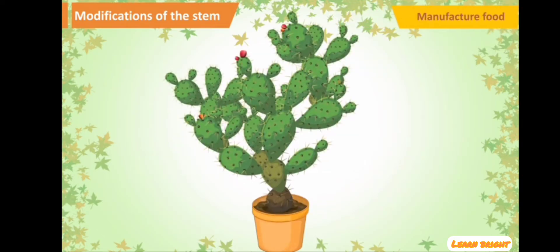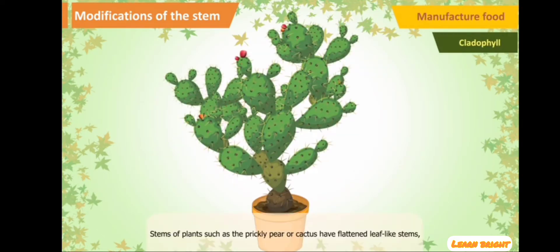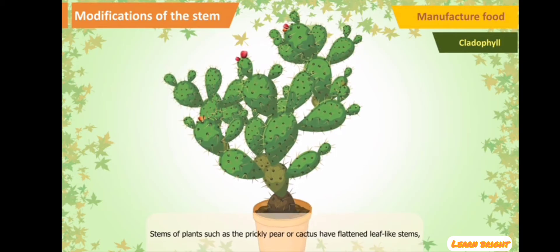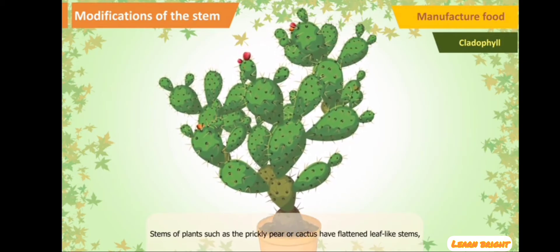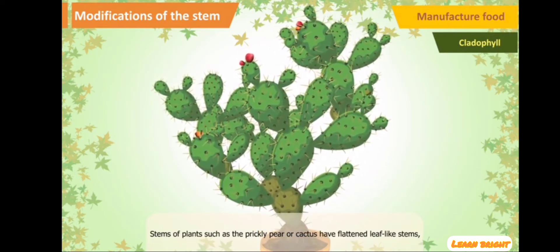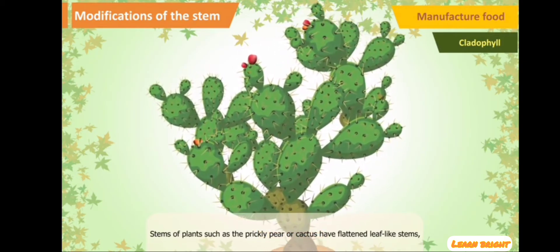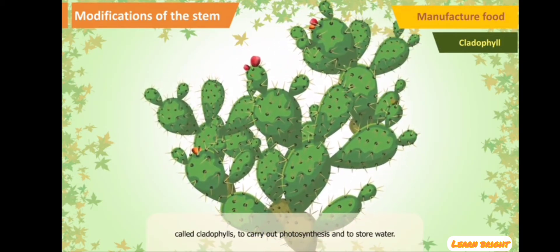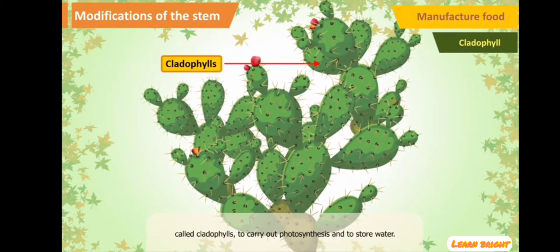Manufacture of food: Stems of plants such as the prickly pear or cactus have flattened leaf-like stems called cladophils, to carry out photosynthesis and to store water.